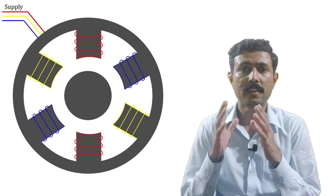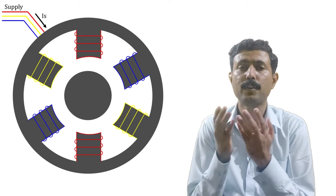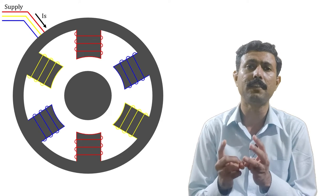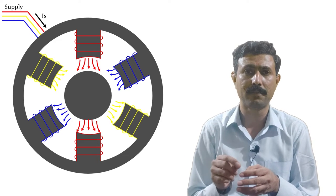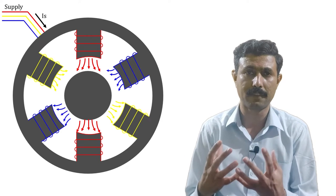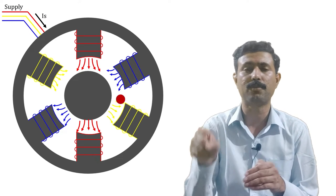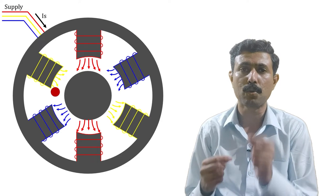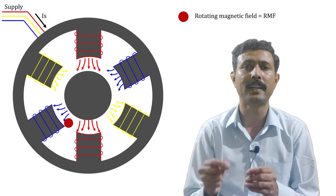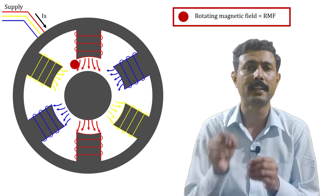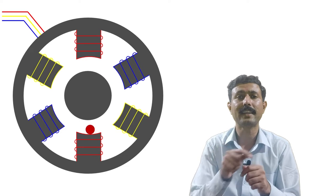When we start the supply of a three-phase induction motor, current starts flowing through all three phases. Because of this current, a three-phase magnetic field is produced in the stator. When there are three individual magnetic fields, the resultant effect is constant in magnitude but keeps rotating — we call it a rotating magnetic field (RMF). So when we start the supply, we get a rotating magnetic field.